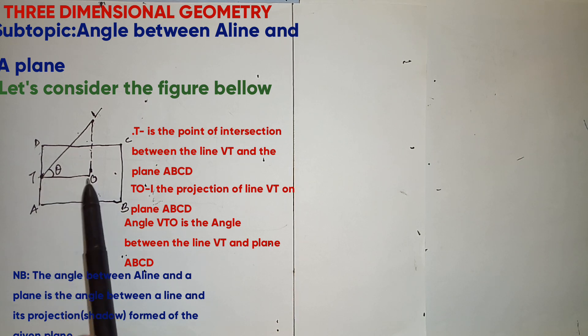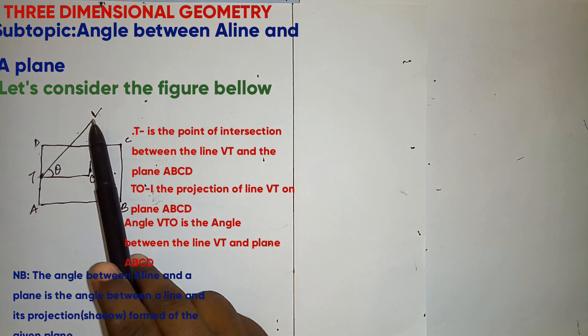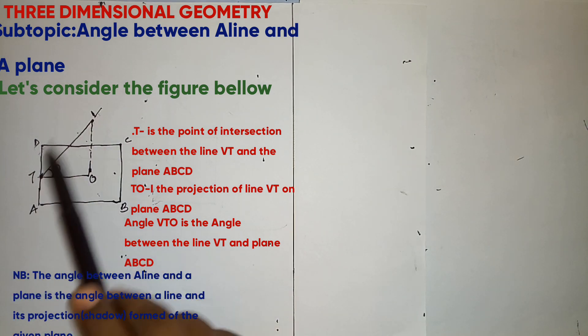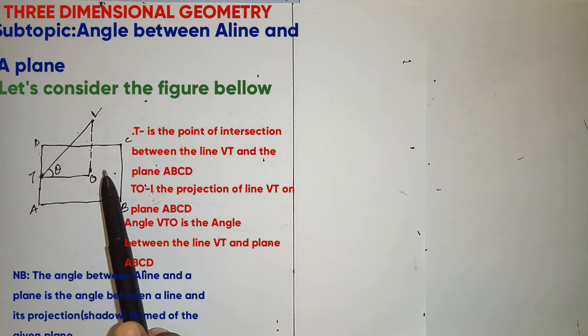And the projection TO is on the plane ABCD. Therefore, the angle between the line VT and the plane will be equal to the angle between the line VT and its projection which is TO on the plane given.